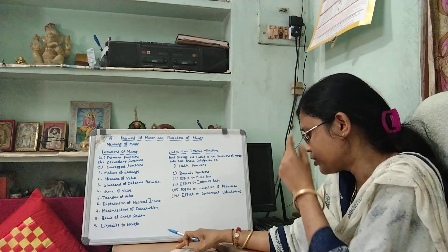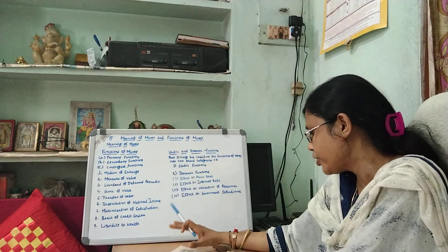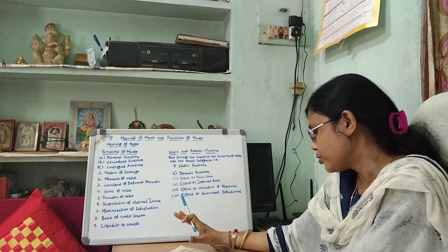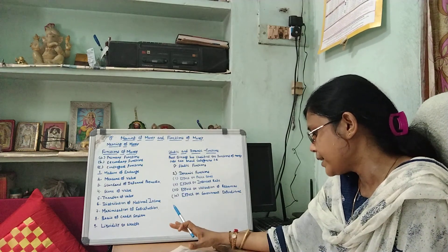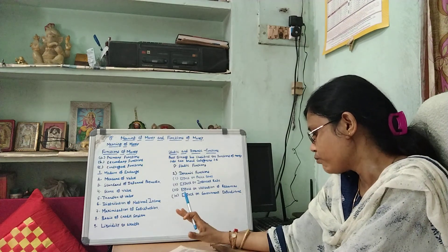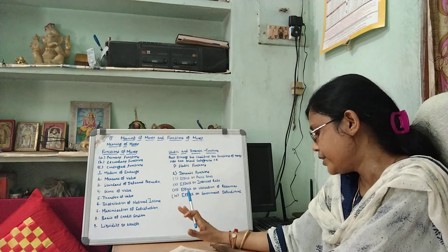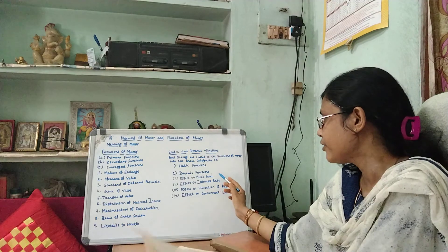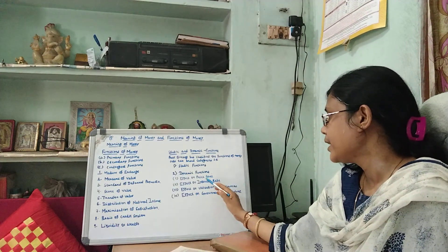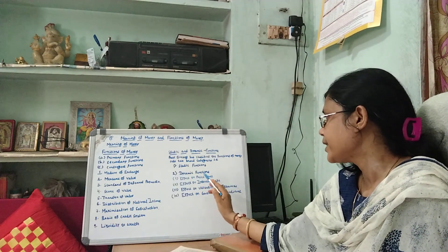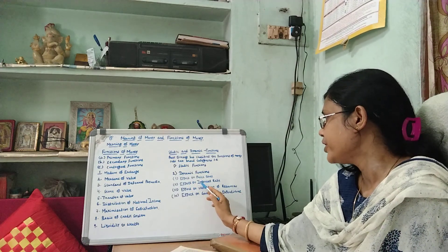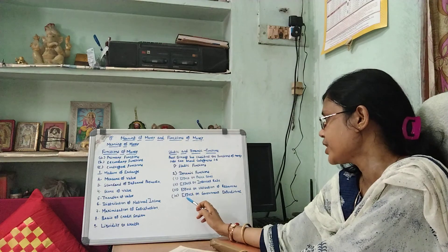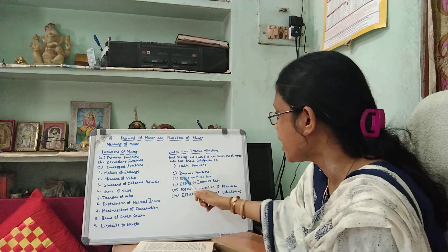Second, dynamic function. The dynamic functions are those by which money actively influences the economic system, with effects on price level, interest rate, volume of production, distribution of wealth and income, etc. Dynamic functions can be classified into four categories: first, effect on price level; second, effect on interest rate; third, effect on utilization of resources; fourth, effect on government expenditure.